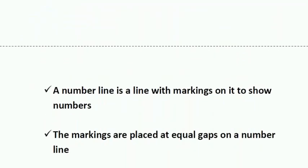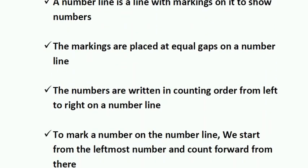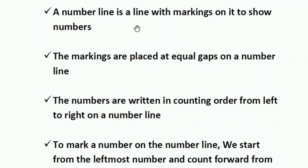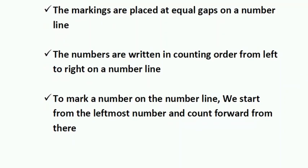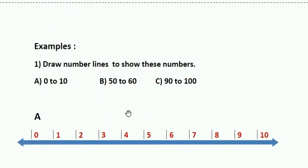Let us summarize what we learned today. A number line is a line with markings on it to show numbers. The markings are placed at equal gaps. The numbers are written in counting order from left to right. To mark a number, we start from the leftmost number and count forward from there.